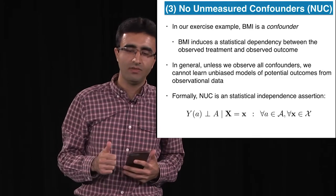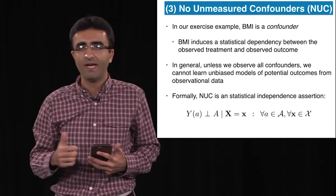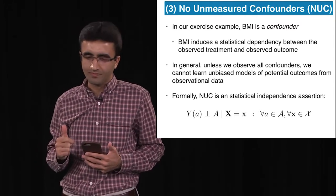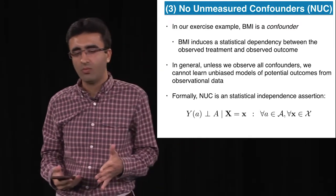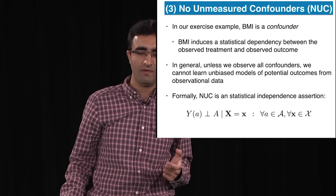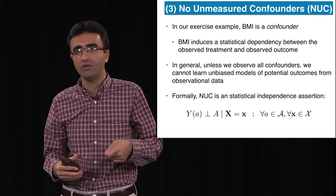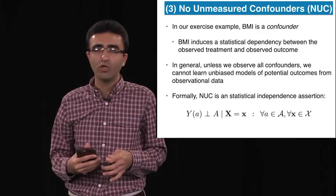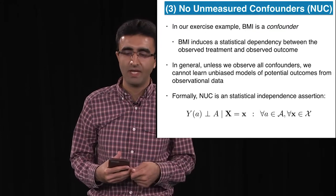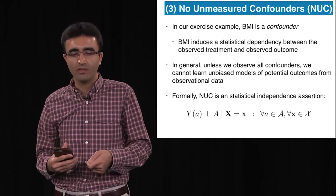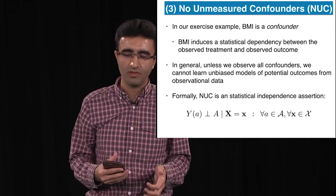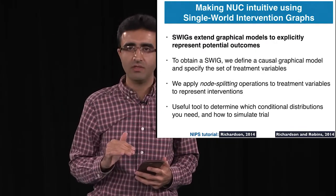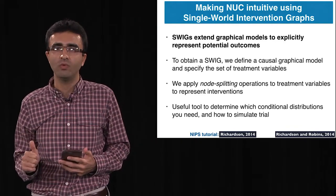The third assumption is no unmeasured confounders: we have to observe all confounders. In our blood pressure and exercise example, BMI was a confounder because it induces a statistical dependency between the observed treatment (whether the person exercised) and the observed outcome (blood pressure). This assumption means that in order to have an unbiased estimate of potential outcomes, we must observe all confounders. More technically, conditioned on covariates, the potential outcome should be independent of the treatment. To make this assumption more intuitive, we can look at what's called a Single World Intervention Graph, or SWIG.